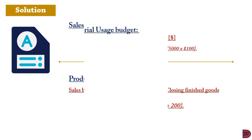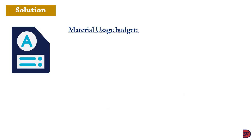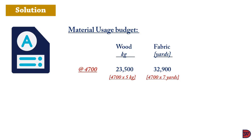For the materials usage budget, based on the 4,700 units to be produced: wood = 4,700 × 5 kg = 23,500 kg; fabric = 4,700 × 7 yards = 32,900 yards; cushion = 4,700 × 4 inches = 18,800 inches.